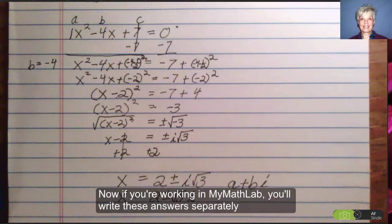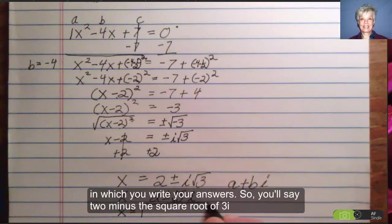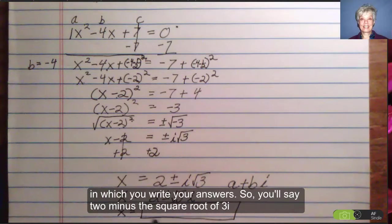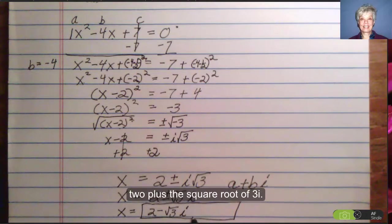Now if you're working in MyMathLab, you'll write these separately. There will be x and then a box, an answer box in which you write your answers. So you'll say 2 minus the square root of 3, i, comma, 2 plus the square root of 3, i.